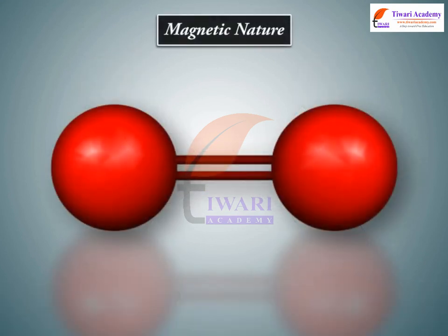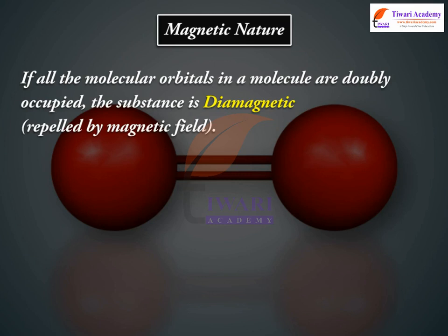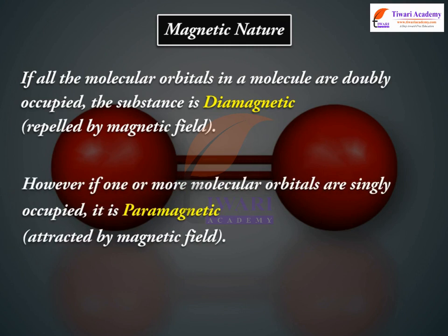Magnetic Nature. If all the molecular orbitals in a molecule are doubly occupied, the substance is diamagnetic (repelled by magnetic field). However, if one or more molecular orbitals are singly occupied, it is paramagnetic (attracted by magnetic field). Example: O2 molecule.